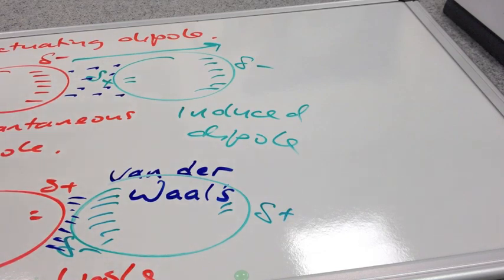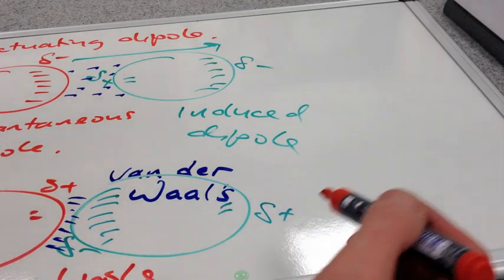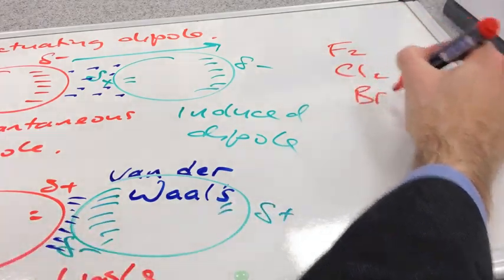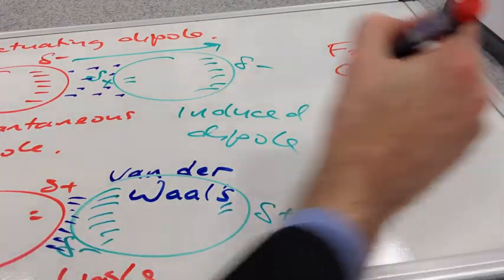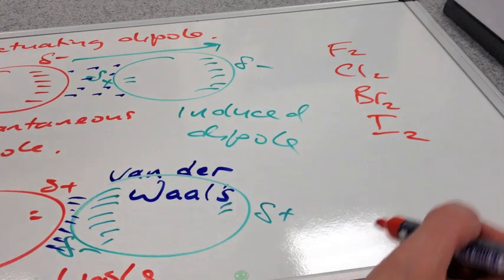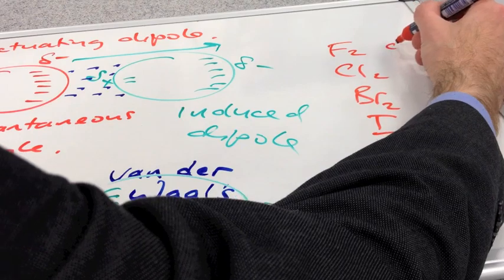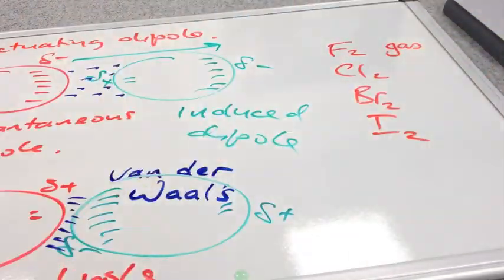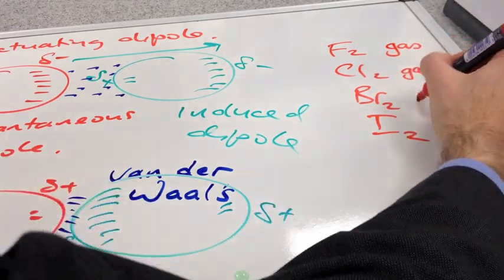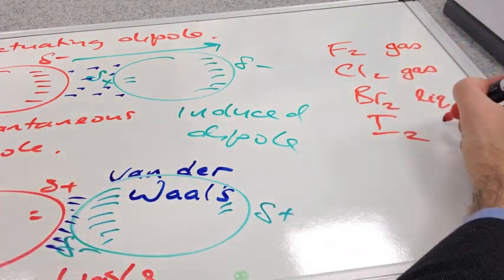So a great example of that is in group 7. So you have these non-polar molecules, F2, Cl2, Br2, and I2. So these are all non-polar molecules. So they have these Van der Waals forces between them. The physical state of fluorine at room temperature and pressure is a gas. Chlorine is also a gas. Bromine is a liquid, and iodine is a solid.